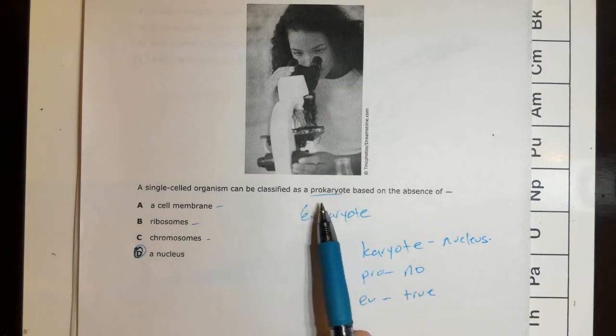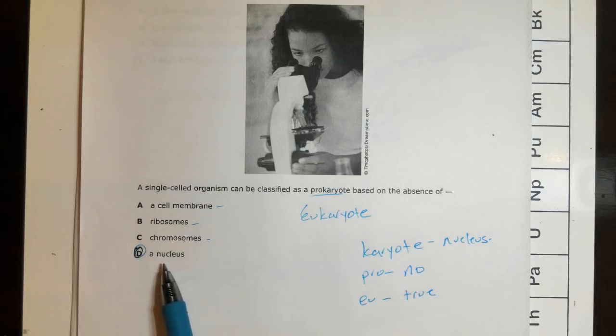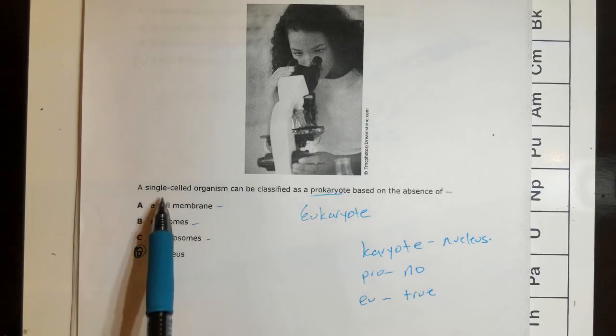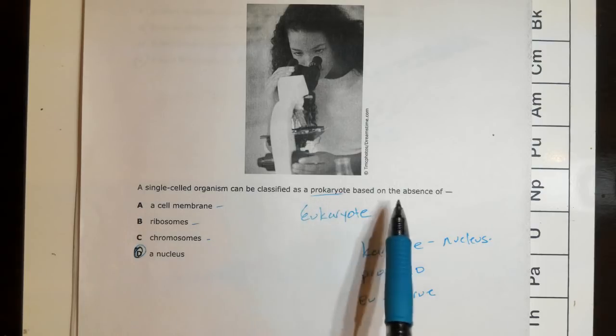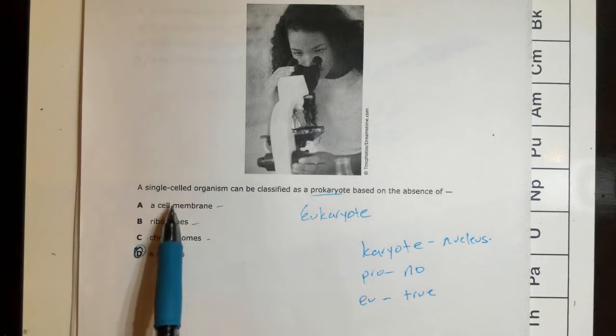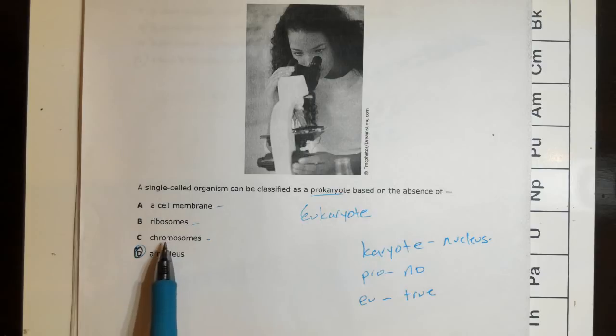That's our answer - it's prokaryote because it does not have a nucleus. But another key bit of information is that a cell membrane, ribosome, and chromosomes, whether it be DNA or RNA, some kind of genetic information, is going to be contained within all of these cells. So prokaryotic and eukaryotic cells all have cell membranes, ribosomes, and chromosomes. The correct answer is nucleus. Prokaryotic cells do not have a nucleus.